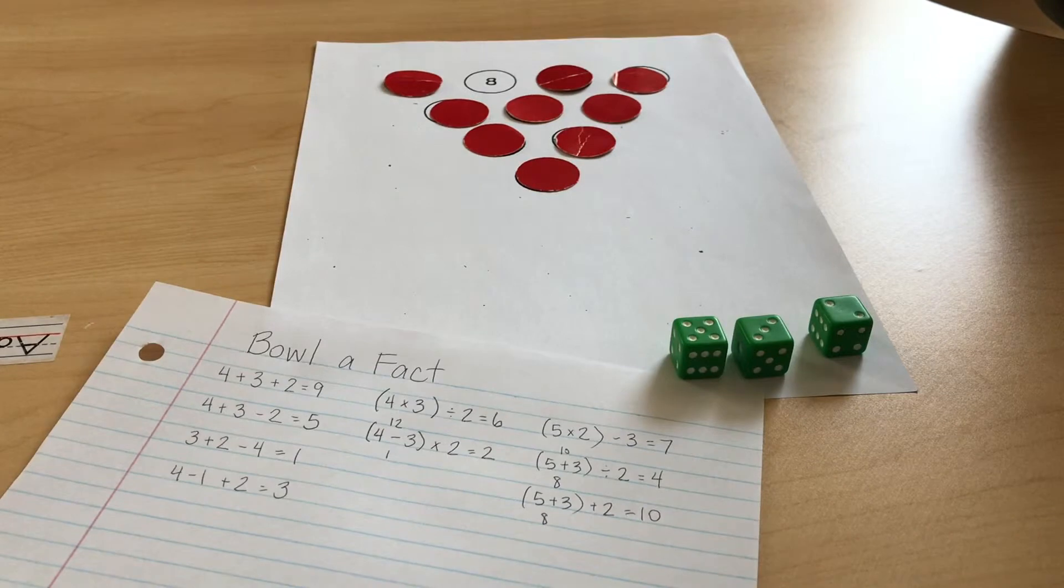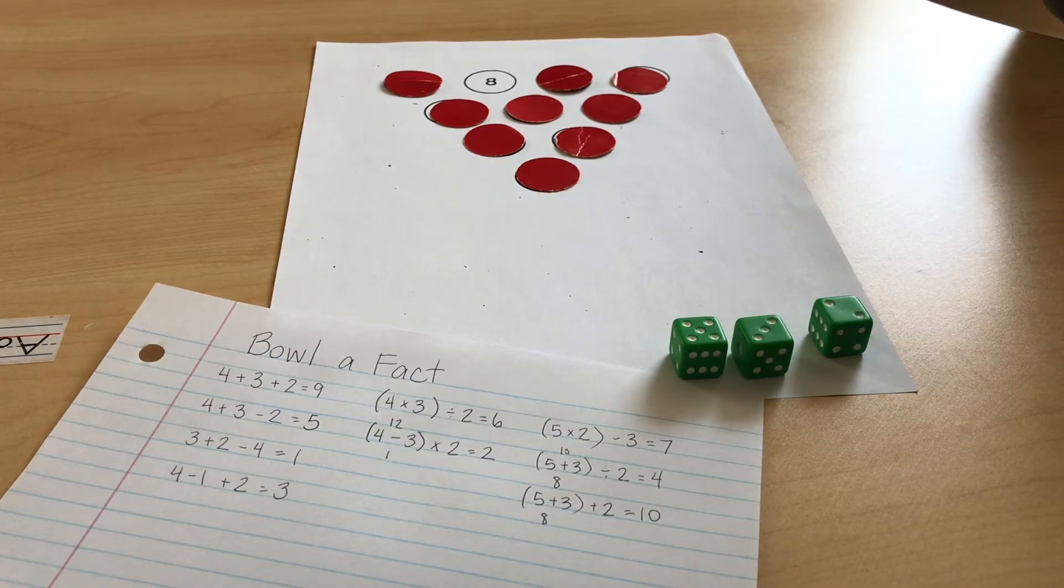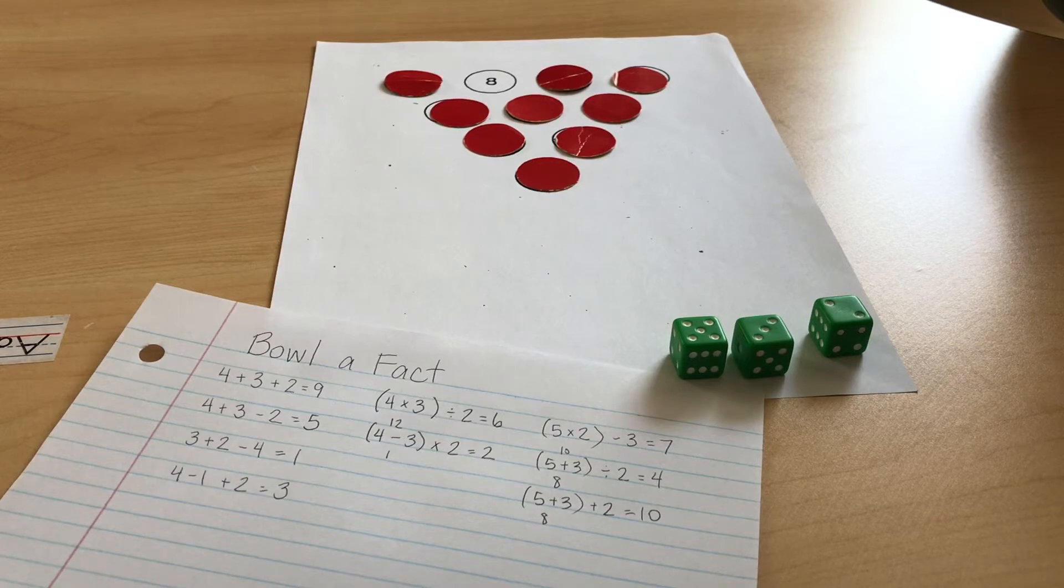Looking at those numbers, I don't really see a way to get to eight. So if we had covered that eight up, we'd get a spare, which means if we were playing against another team and they got a strike, they would win. But if they didn't and we got a spare, then we would win. Since we weren't able to cover up that eight, we have a final score of eight.